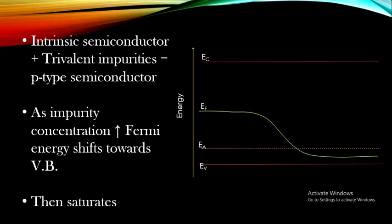In this manner, we have explained how Fermi energy changes with respect to temperature — at both low and high temperatures — and how it changes with the type and concentration of impurity added, for both n-type and p-type semiconductors. This is the dependence of Fermi energy with respect to temperature as well as impurity concentration. Thank you.